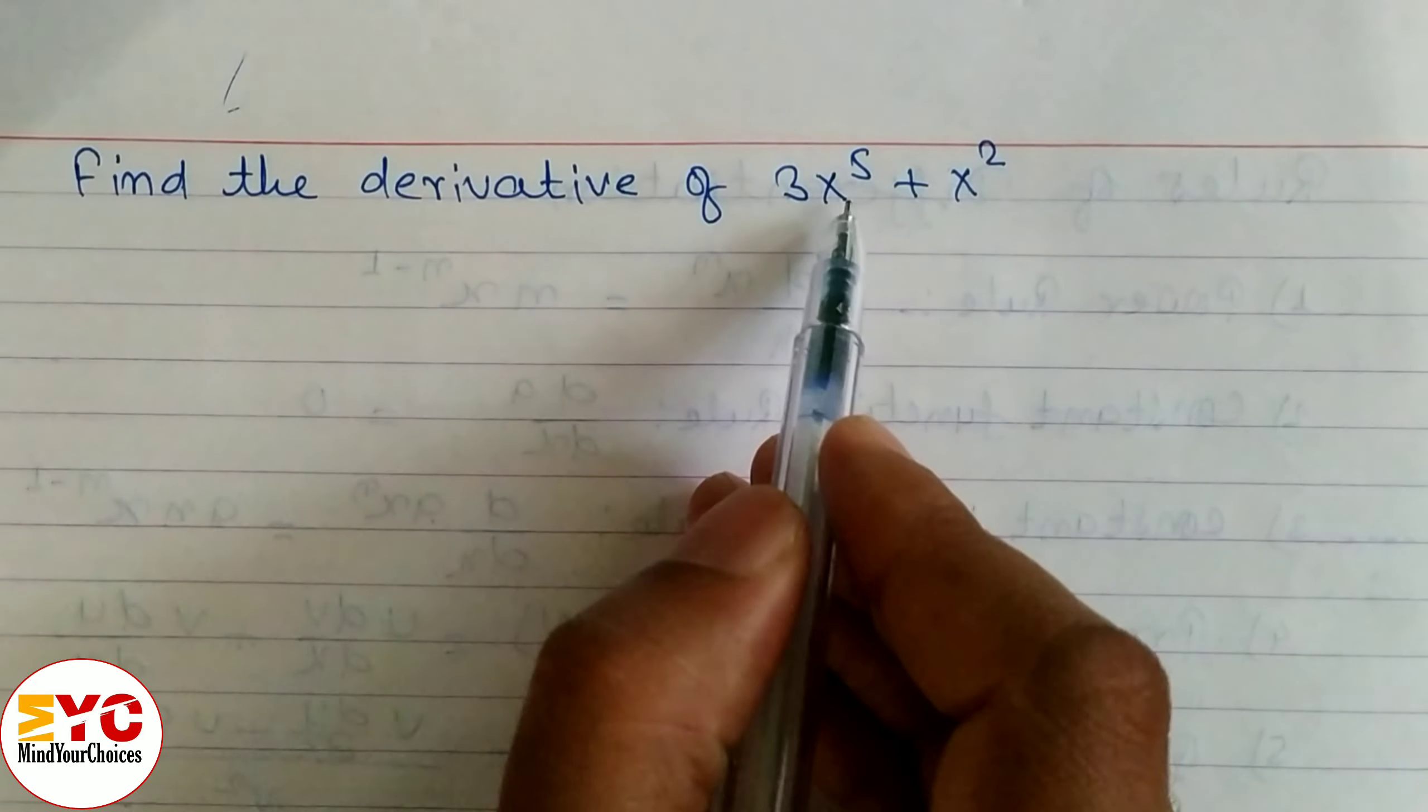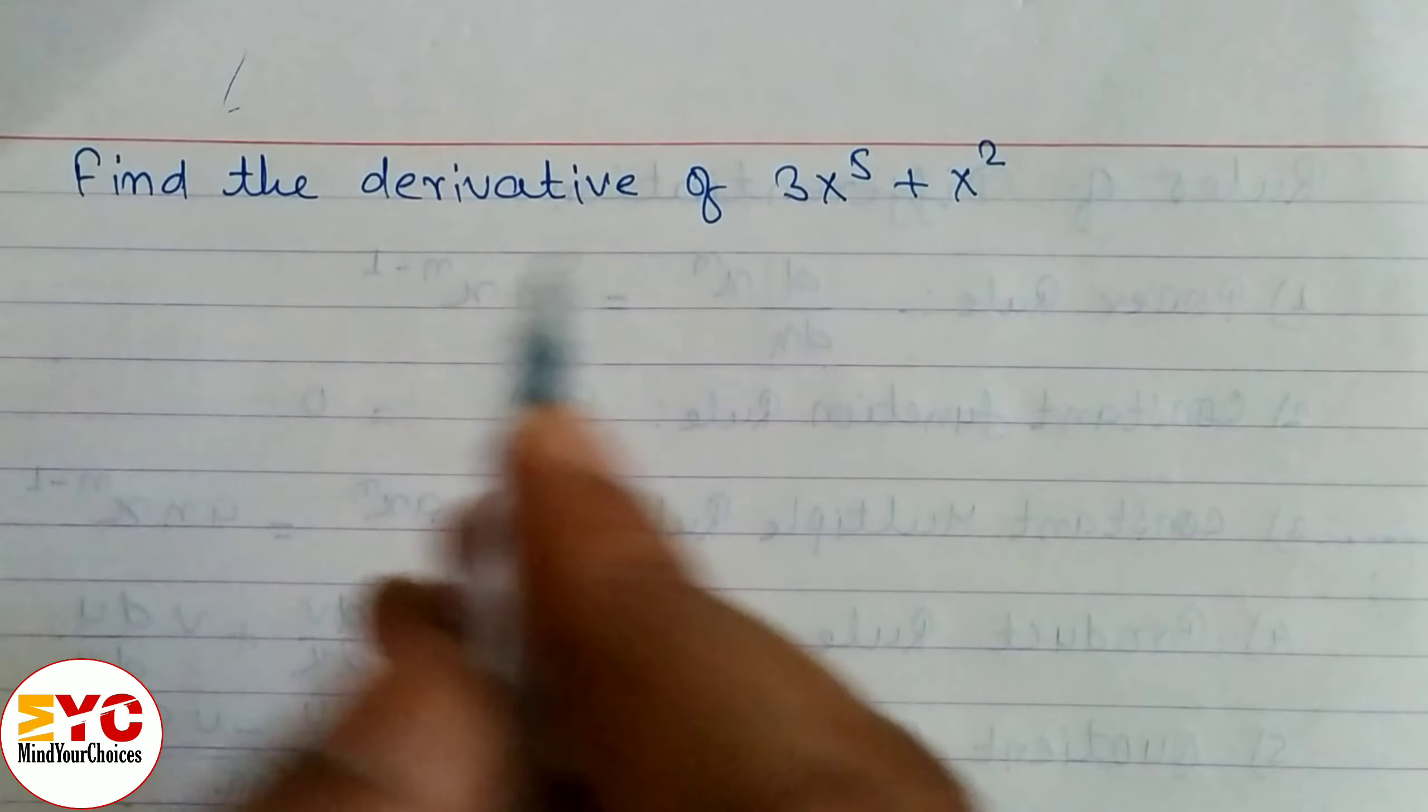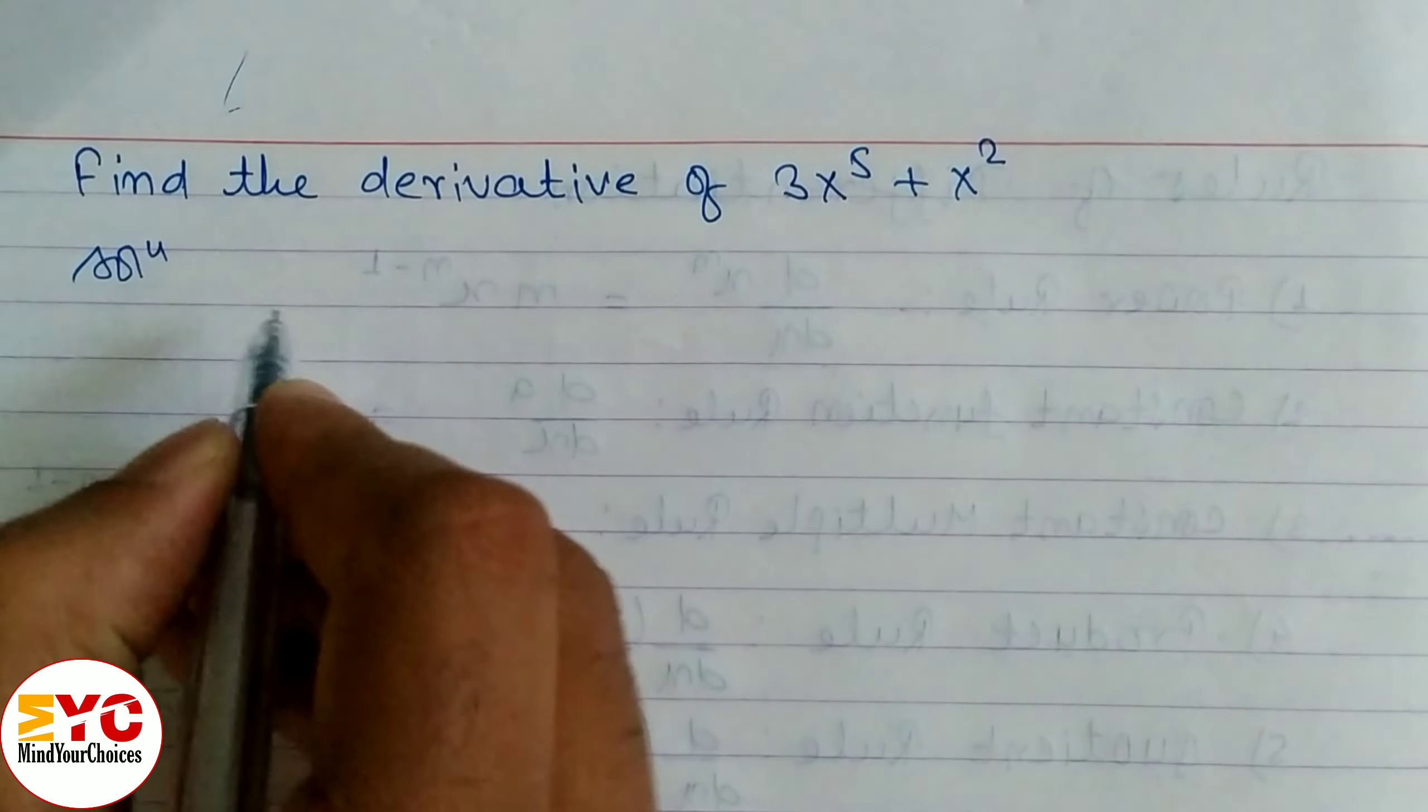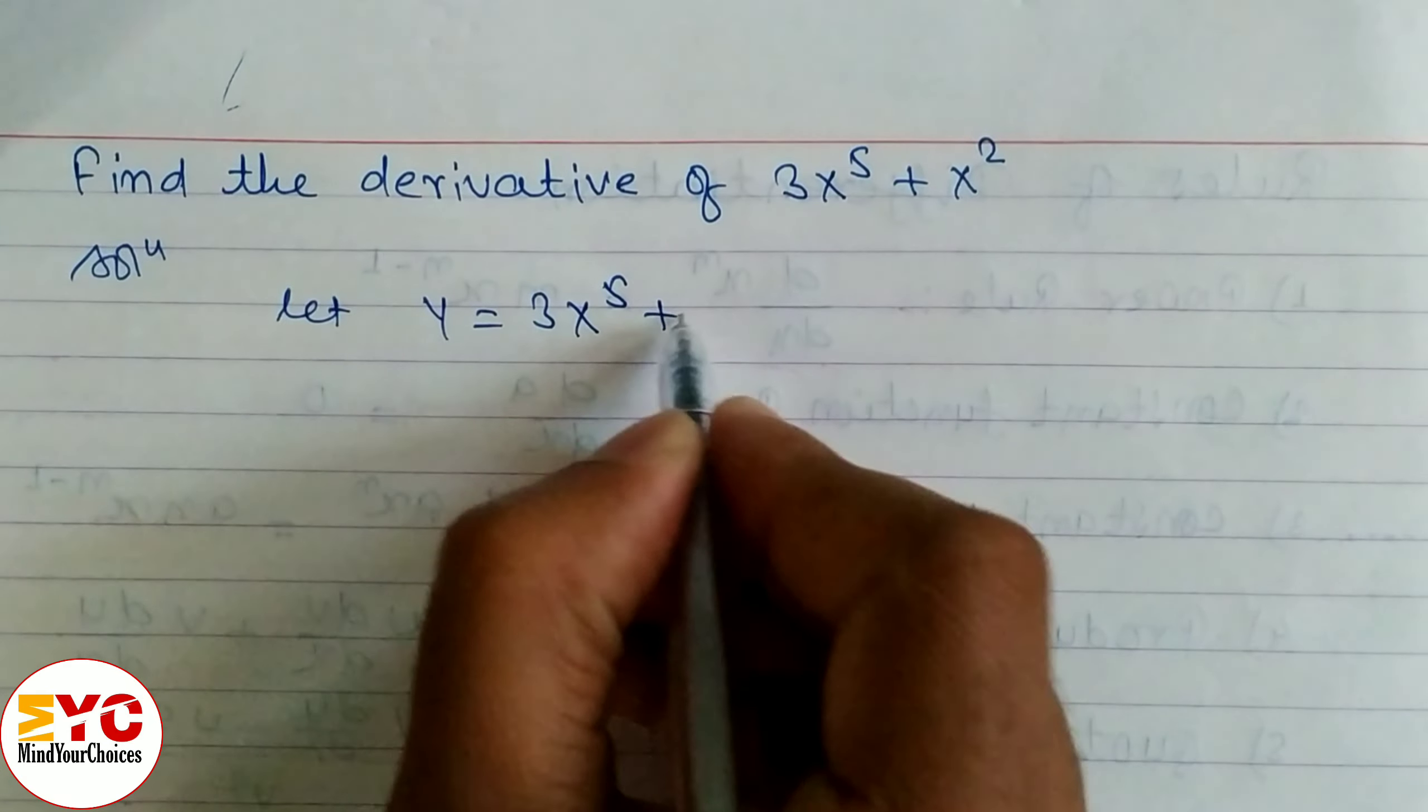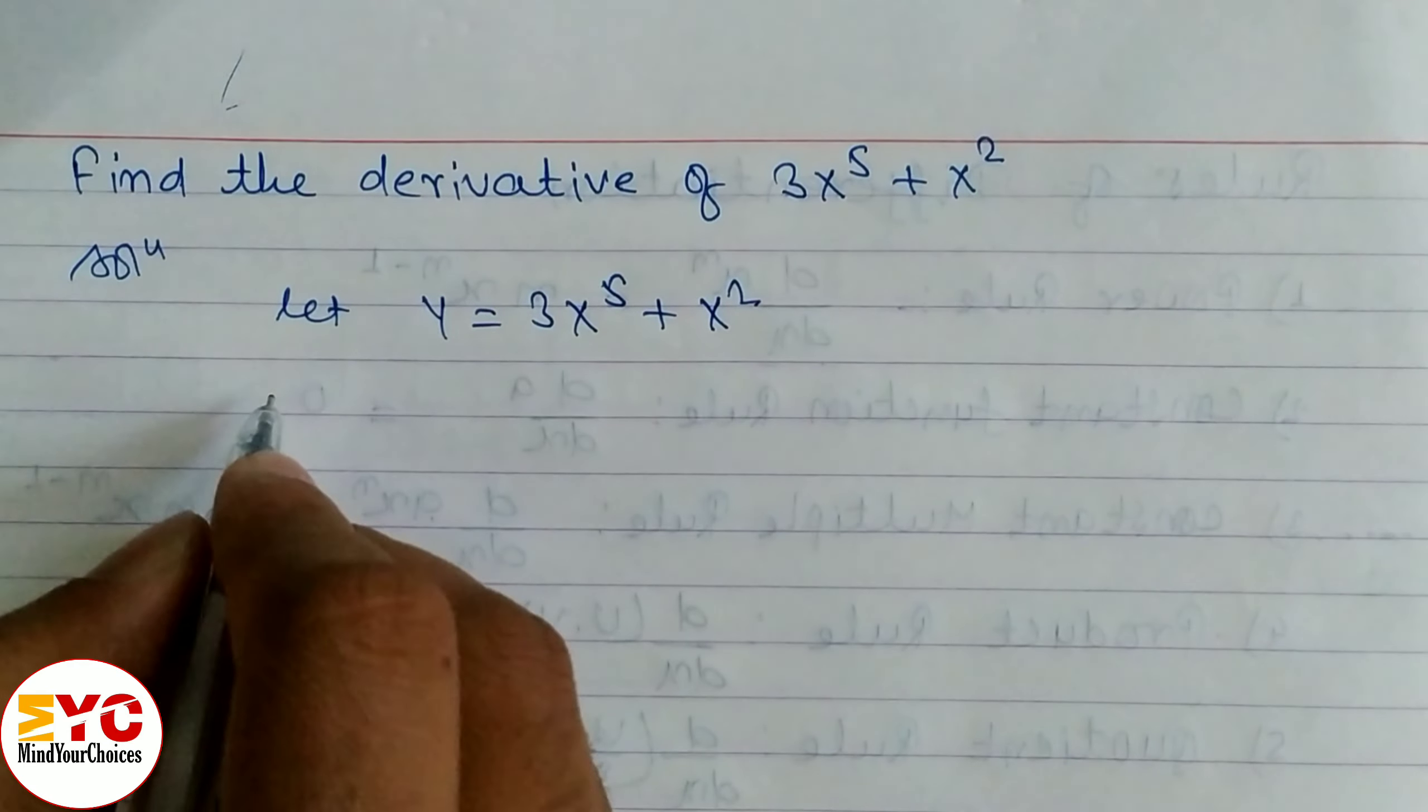Find the derivative of 3x power 5 plus x square. We have to find our derivative, let's take a start. So here let y is equal to 3x power 5 plus x square.